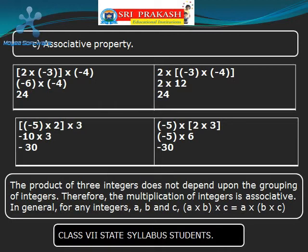Now let us take minus 3 and minus 4 together and multiply by 2. The answer we get is also 24. Let us have another set of three integers: minus 5, 2, and 3. First let us take minus 5 and 2 and multiply. We get minus 10. To this let us multiply 3. Now let us take 2 and 3 as a group and multiply. We get 6. To this let us multiply minus 5. The product we get is minus 30. So what did we observe: the product of integers does not depend upon the grouping of integers.